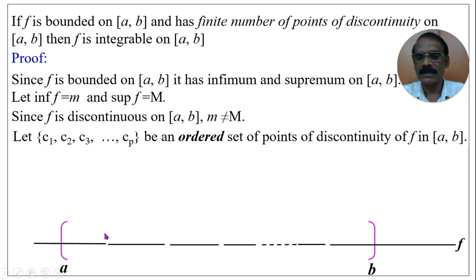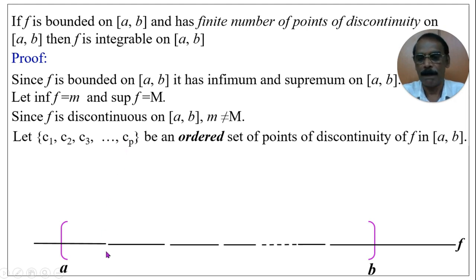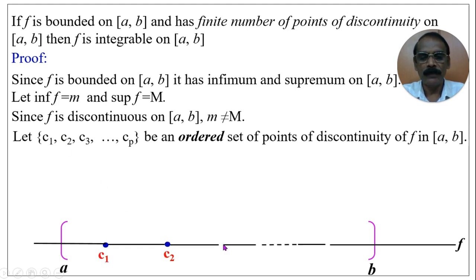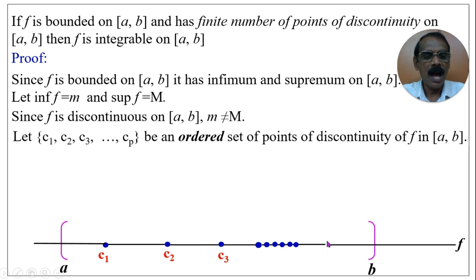The first point of discontinuity is c1, the second is c2, the third is c3, and so on. The last point of discontinuity is cp.